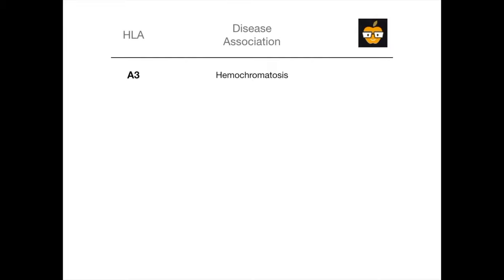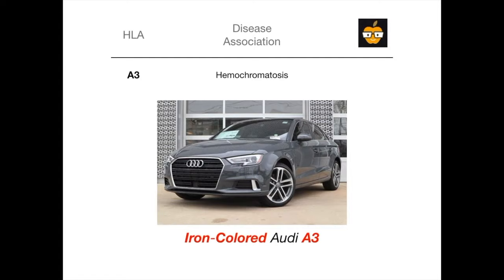Our first HLA subtype is A3. HLA A3 is associated with hemochromatosis. Hemochromatosis is due to iron overload. So I associate this with iron. What I want you to think about is the Audi A3 — because this is HLA A3. Think about the Audi A3 and look at this beautiful specimen of a car — this is the iron-colored version of the Audi A3. Think about the iron-colored Audi A3, which tells you we're talking about HLA A3 and hemochromatosis, because hemochromatosis is due to iron overload. Super simple.